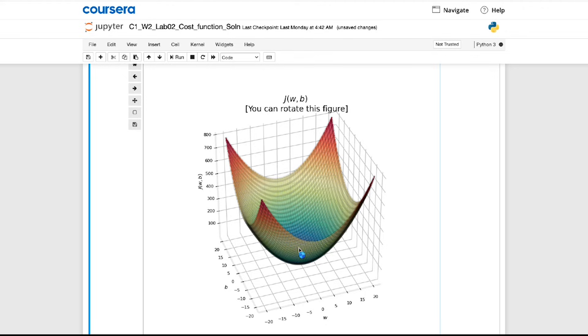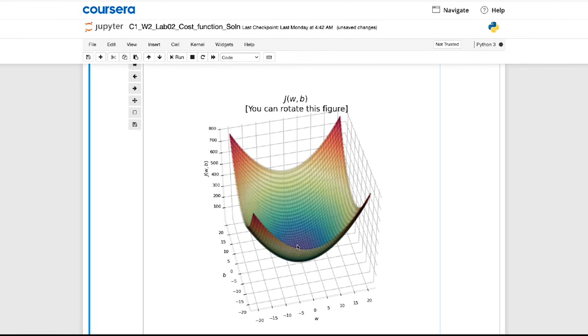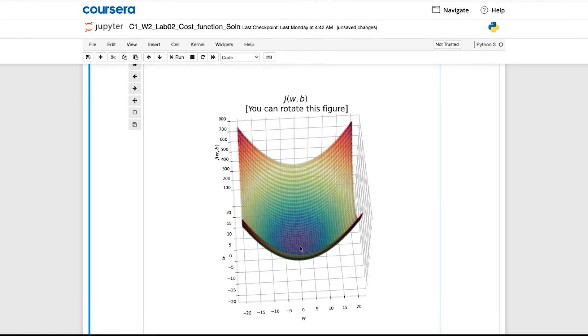Finally, the optional lab also has a 3D surface plot that you can manually rotate and spin around using your mouse cursor to take a better look at what the cost function looks like. I hope you enjoy playing with the optional lab.